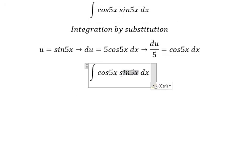This one we change by u. Cosine 5x dx we change by du over number 5.